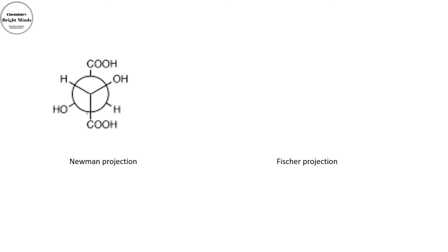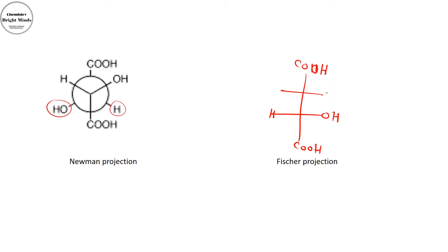Now let's look at succinic acid. I need to first draw the Fischer projection, so I take carbon number 2 and carbon number 3. I draw the Y-shape, place the carboxylic group on the Y, then flip the two back groups — putting hydroxyl on one side and hydrogen on the other. To confirm the conversion is correct: the two hydroxyls were on different sides in the Newman, and now they are on the same side in the Fischer. For R and S, hydroxyl has higher priority than carboxylic acid, so hydroxyl is number one, carboxylic acid number two, then number three. Remember hydrogen is on the side, so you must convert S to R or R to S.